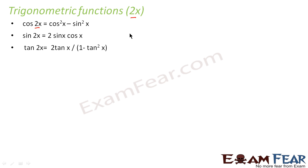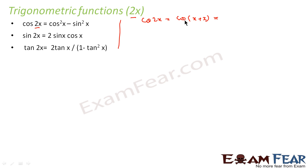Let me prove this. First, let me take cos 2x. So cos of 2x, I can also say this is equal to cos of x plus x. Now, we are talking about cos of x — we know that cos wants to do things alone and he knows the work done by sin.